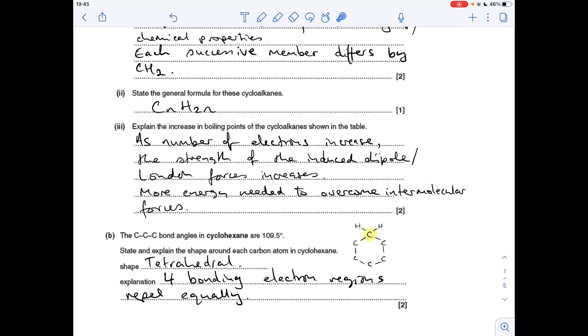Part B gives us the bond angle between the carbon atoms in cyclohexane. We've just got to explain why we've got that angle of 109.5. I've just drawn part of cyclohexane up there. Around each carbon you've got basically four bonding regions, so they would all repel equally, and that would give you the tetrahedral shape and obviously that 109.5 degree angle.